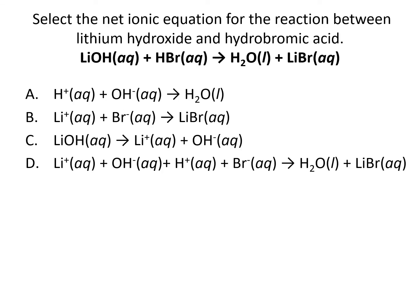Select the net ionic equation for the reaction between lithium hydroxide and hydrobromic acid. The molecular equation is: LiOH(aq) + HBr(aq) → H₂O(l) + LiBr(aq). You should be able to write that yourself based on the reactants given in word form. Is the correct answer: A) H⁺(aq) + OH⁻(aq) → H₂O(l); B) Li⁺(aq) + Br⁻(aq) → LiBr(aq); C) LiOH(aq) → Li⁺(aq) + OH⁻(aq); or D) Li⁺(aq) + OH⁻(aq) + H⁺(aq) + Br⁻(aq) → H₂O(l) + LiBr(aq)?